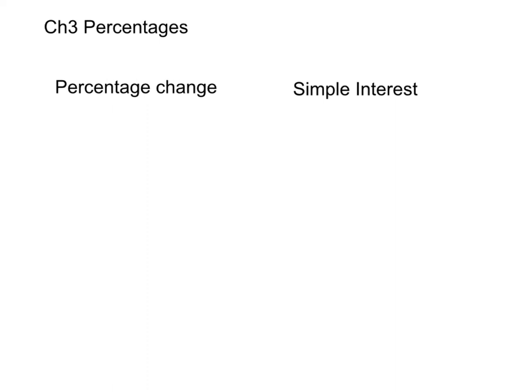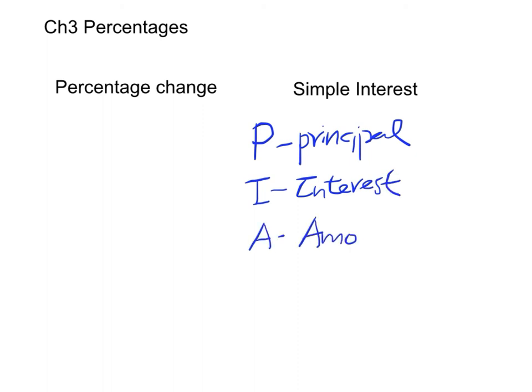Simple interest, which is actually quite simple. We have a principal P, an original amount of money, and we have I as the interest, and then A as the amount, and R as the interest rate, and T stands for the time of the deposit of a certain amount of money.